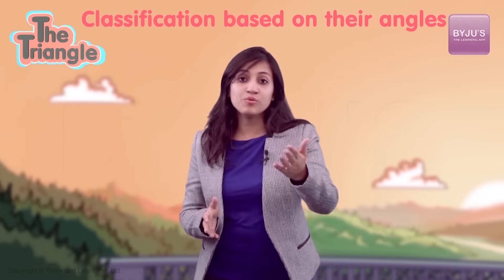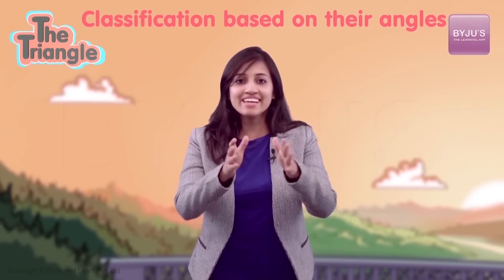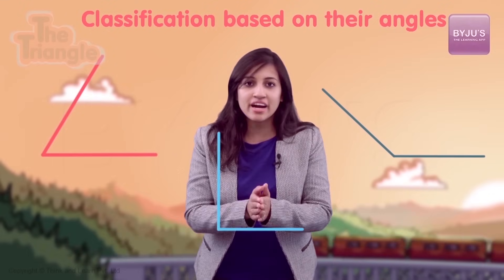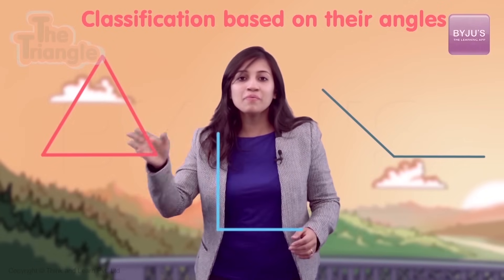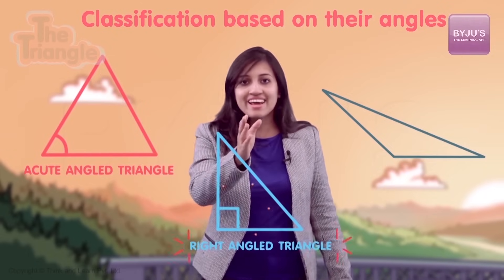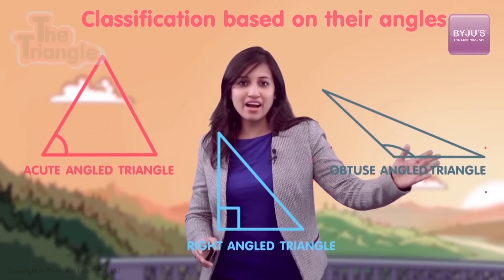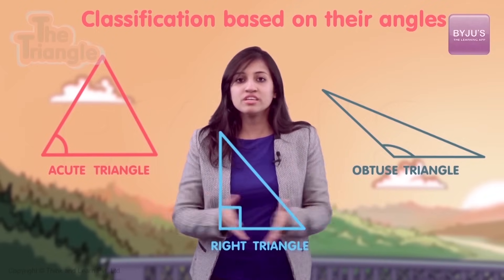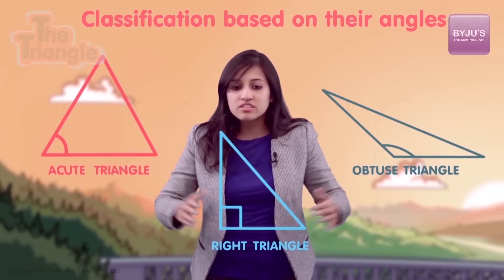There's one more type of classification — based on the angles created by the sides. I'll help you visualize it using our old friends: the three types of angles — acute angle, right angle, and obtuse angle. All I'm going to do is connect a third side to these two sides, and what do we have? An acute triangle, a right triangle, and an obtuse triangle.